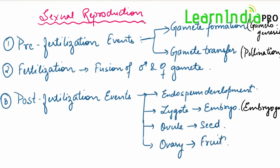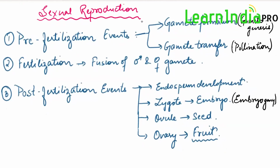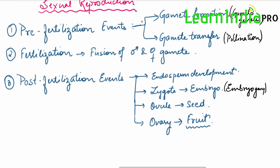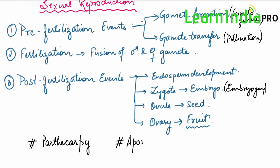Once endosperm develops and the zygote develops into an embryo, the ovule develops into a seed and the ovary develops into a fruit. This is the characteristic feature of angiosperms — they bear fruits and have covered seeds. These are the major events of sexual reproduction: pre-fertilization events (gametogenesis and pollination), fertilization, and post-fertilization events. Apart from these, this chapter also covers parthenocarpy — that is seedless fruits — apomixis, and polyembryony.